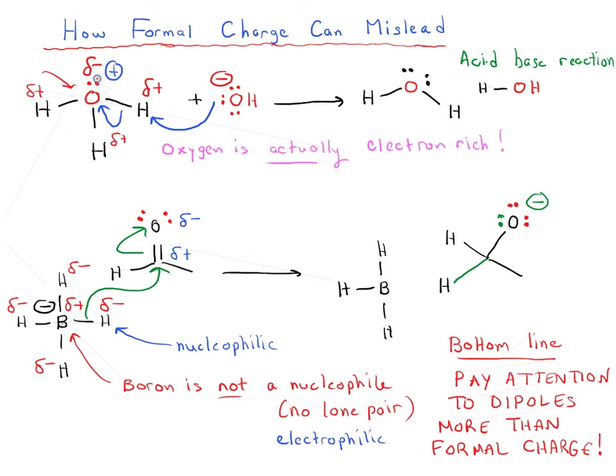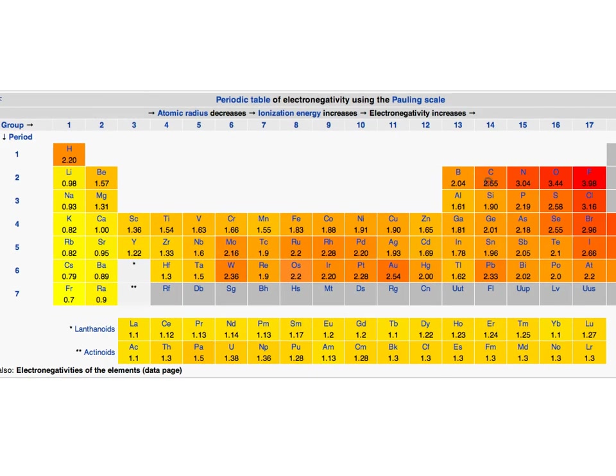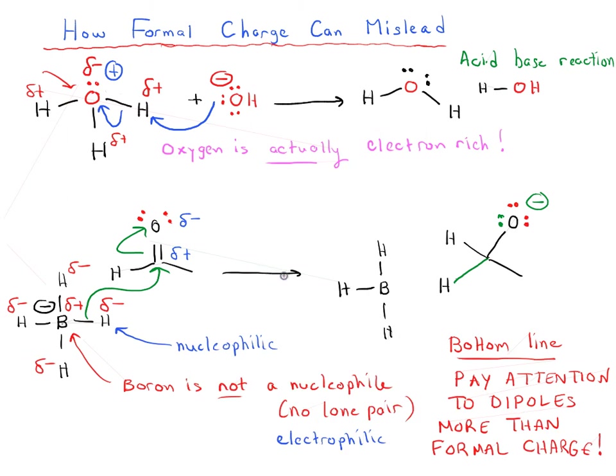So just keep this in mind. When you're going through chemistry, just make sure that you understand how electronegativity differences, you can find good electronegativity tables everywhere, are going to tell you about the polarity of a bond much more than the formal charge of an atom.